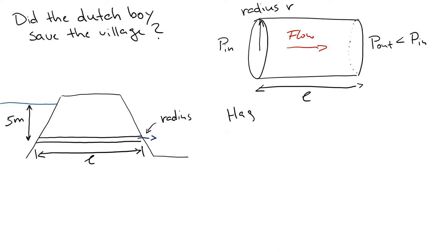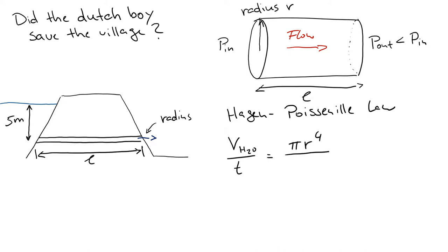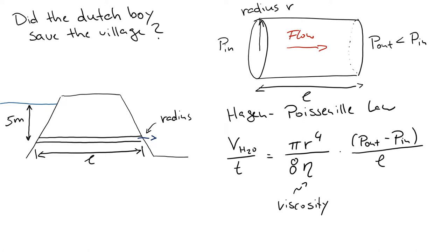The Hagen-Poiseuille law states that the volume of water flowing through this pipe per unit time equals pi times the radius to the fourth power — the fourth power will become very important shortly — divided by 8 nu, which is the viscosity of water, as we learned when we talked about Stokes' law. This is multiplied by the pressure difference between the outlet and inlet divided by the length. This latter part of the equation is what we refer to as the driving gradient: what is making the flow happen.